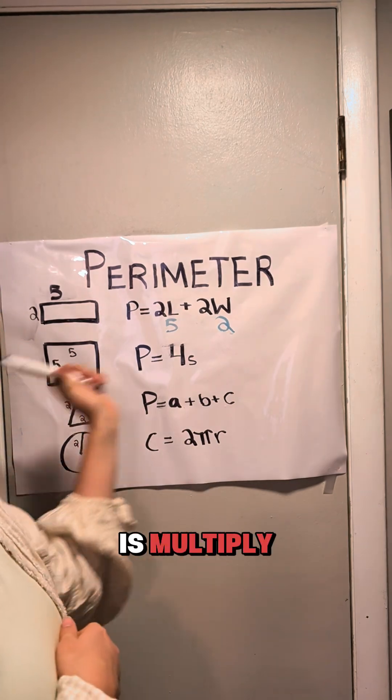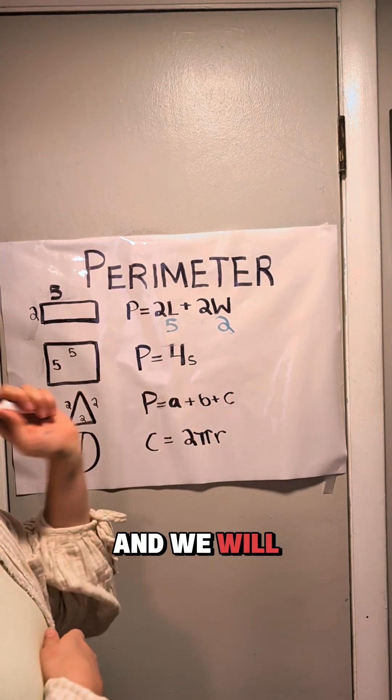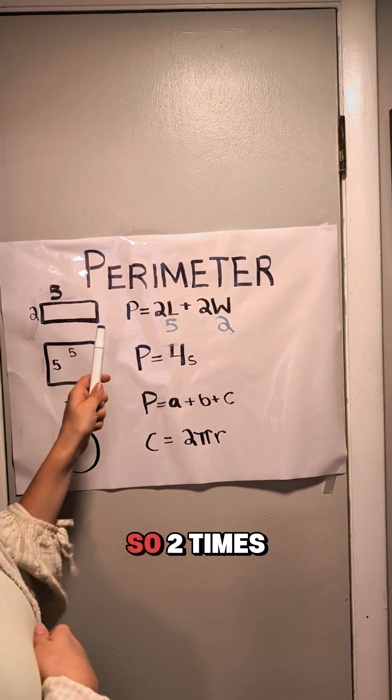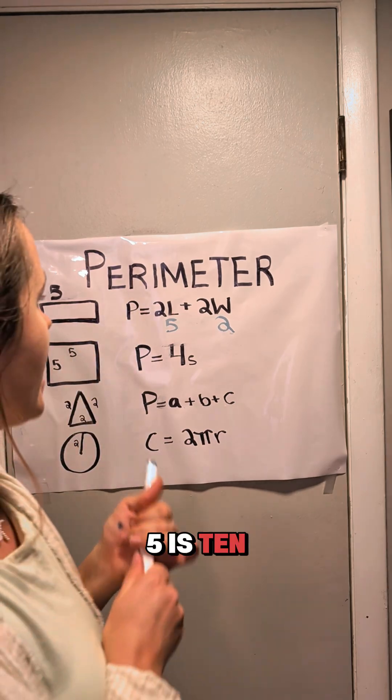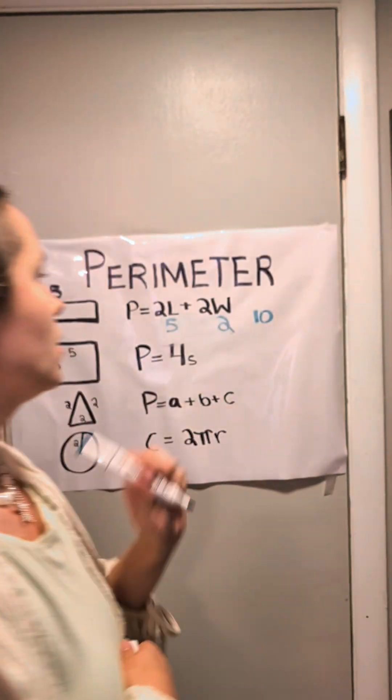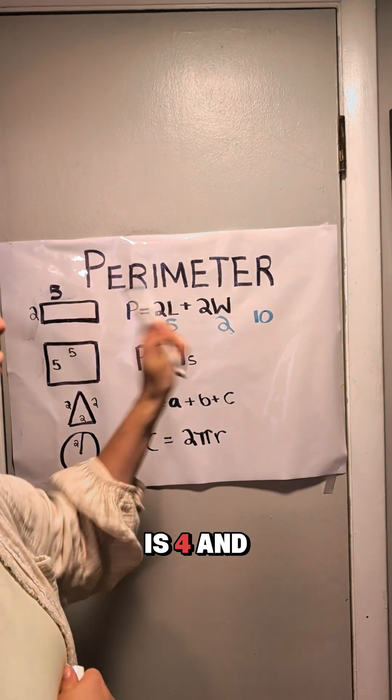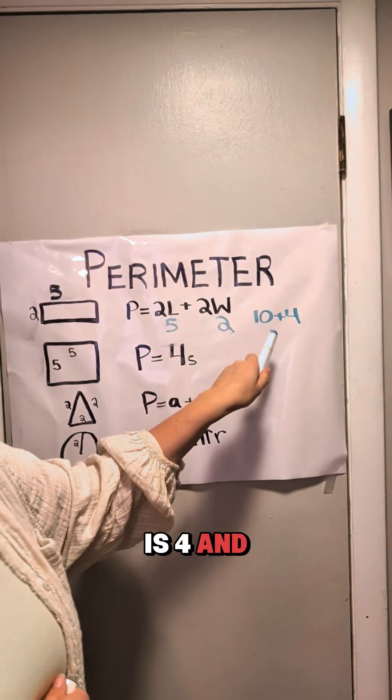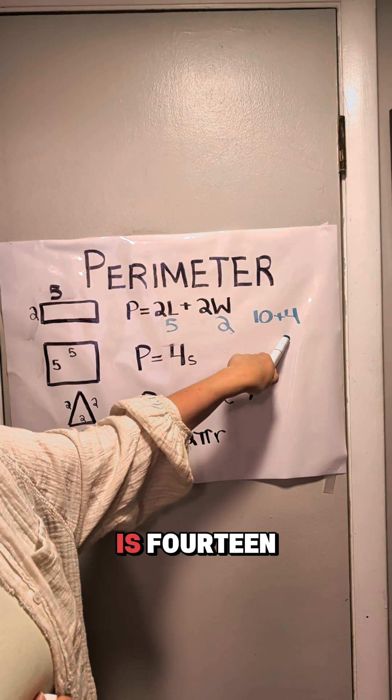Now all we have to do is multiply and add these things together, and we will get the perimeter. So 2 times 5 is 10, 2 times 2 is 4, and 10 plus 4 is 14.